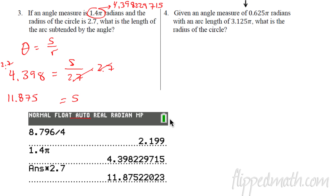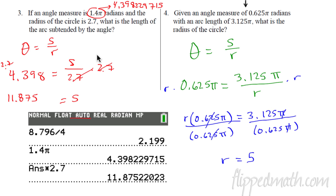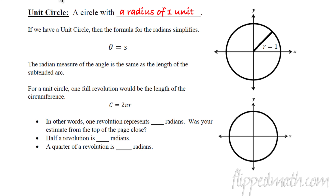Pause the video and try number four yourself. The answer is r equals 5. You plug everything in and multiply both sides by r, then divide both sides by 0.625π — the pi's cancel — and you get the radius equals 5.